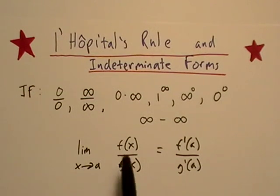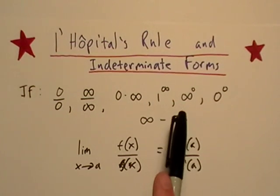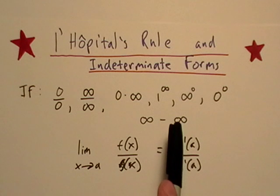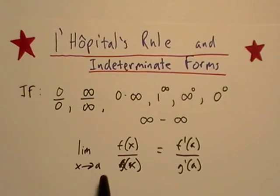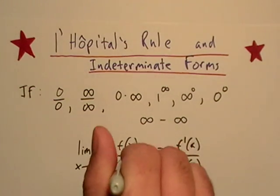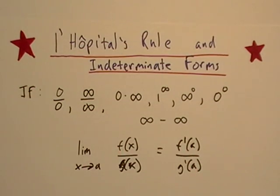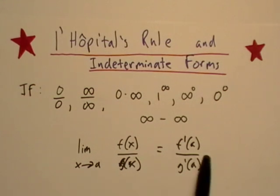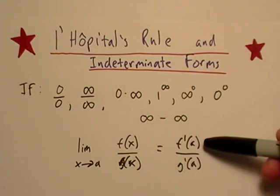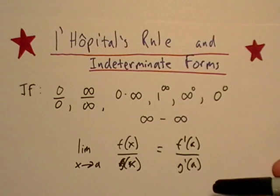So basically, if you end up in this situation while taking the limit of a function, the goal is maybe you can rewrite it as a rational function and we'll do some examples. Maybe it's in the form where there's a function divided by another function. Well, the limit as x goes to a, we just want to take the derivative of the top over the derivative of the bottom.